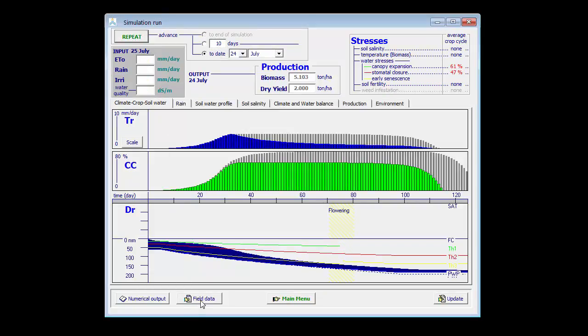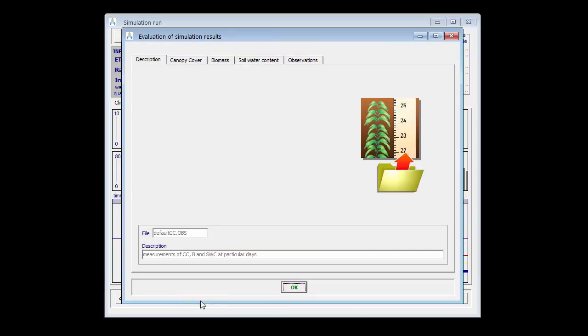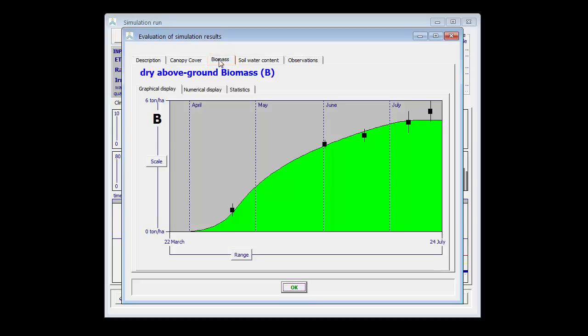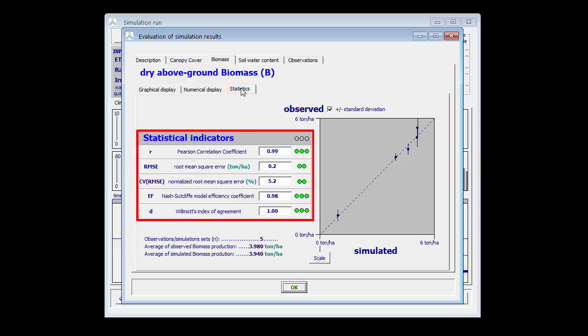Since I have field data, I can now use it to evaluate my simulated biomass. I click here on biomass, and in green I find the simulated biomass and in black the observed data. I can look at the statistics, and the statistical indicators show me the goodness of fit between observed and simulated data.